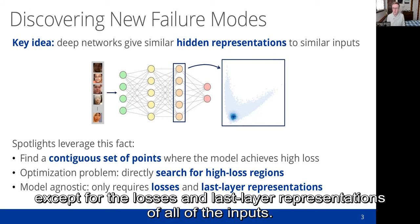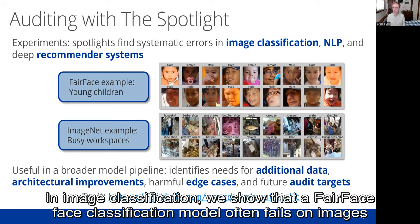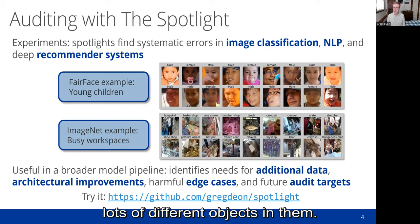We demonstrate this flexibility by running the spotlight on a variety of different models and different modalities. In image classification, we show that a FairFace classification model often fails on images of young children, and an ImageNet model often fails when faced with images that have lots of different objects in them.